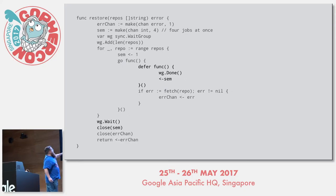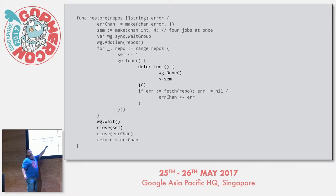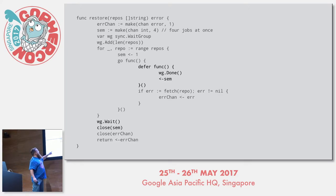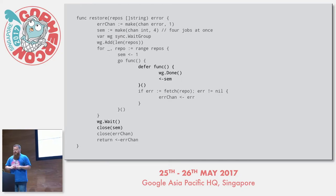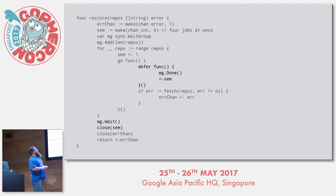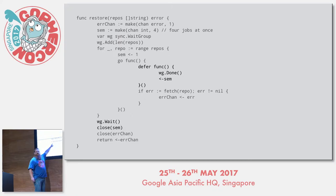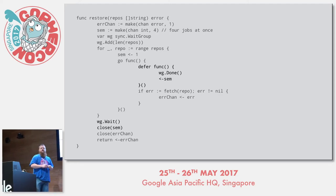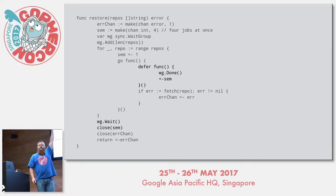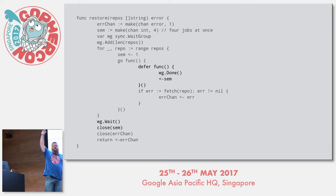The close of the semaphore happens after waitgroup.wait — they happen in sequence, so we know it happens afterwards. We also know that the close of semaphore happens after the call to waitgroup.done, because that statement won't return until all the waitgroups have been called done. However, this receive from the semaphore does not necessarily happen before the close. So, can the close of semaphore cause a panic? Who thinks yes? Who thinks no?